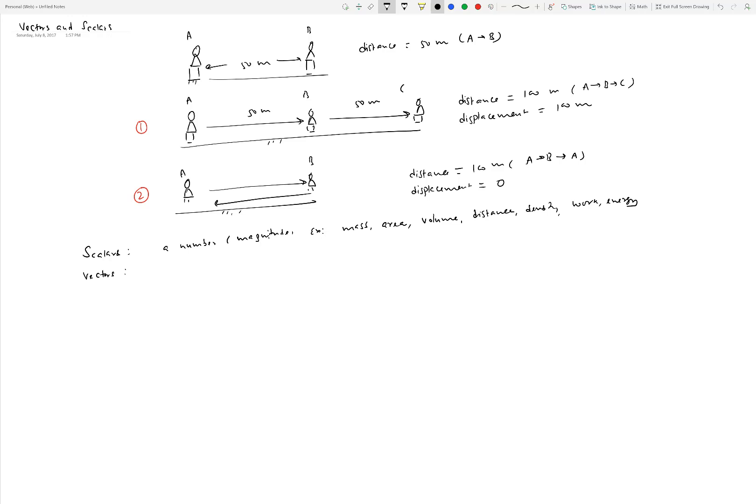Vector quantities require a number and a direction. Displacement is an example. For any vector, you must specify its magnitude and direction. Velocity requires stating a car is moving in a certain direction at a certain speed.